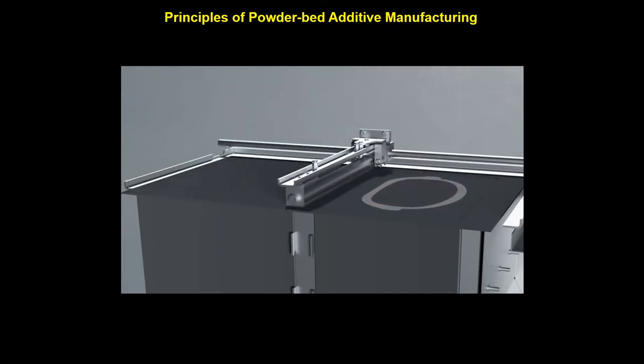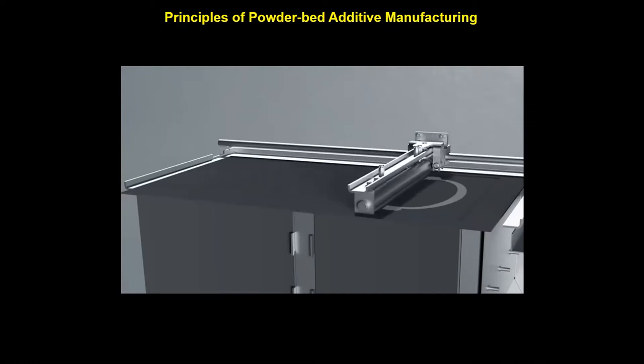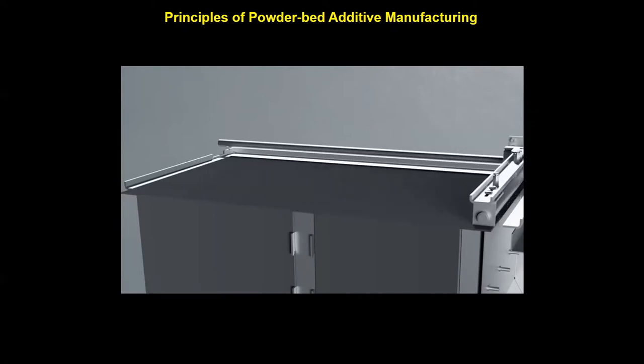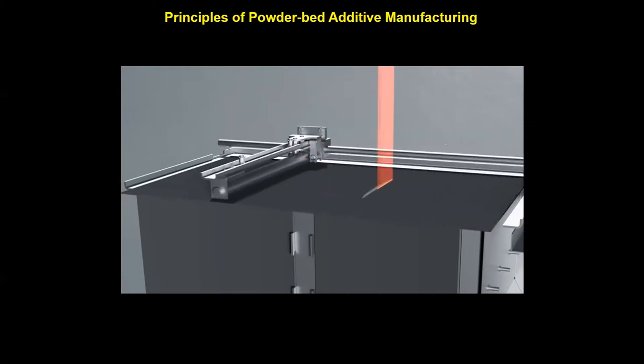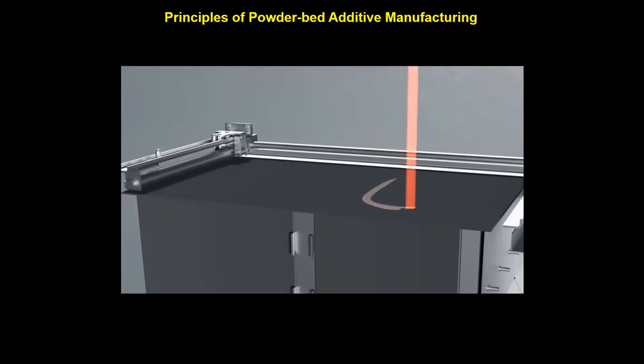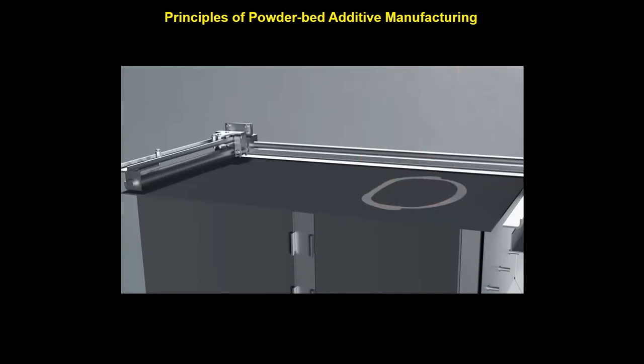This process produces the material in a layer upon layer manner, which gives us a high chance to have some defects like pores inside the material, which is highly dependent on the processing parameters like laser power, laser scanning speed, or layer thickness. So we need to optimize these processing parameters to make sure we get a very high density material.